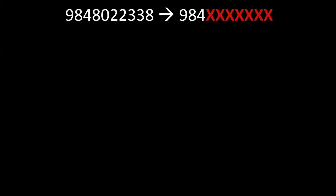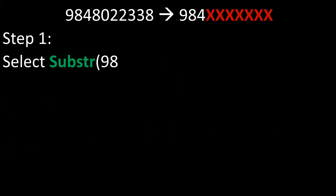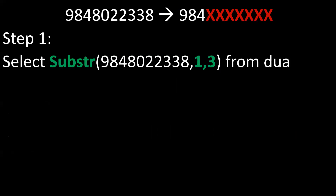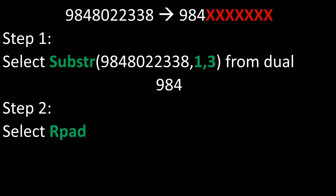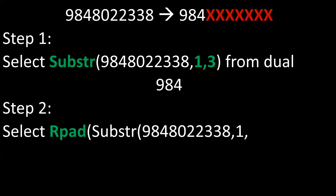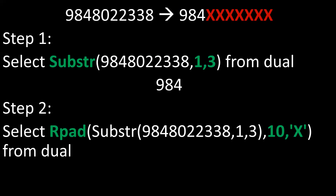If we want to display the first three characters of a phone number, we first extract the first three characters using substring(1, 3). Then we need to mask the rest of the characters with 'X'. By using RPAD, we can achieve the result.